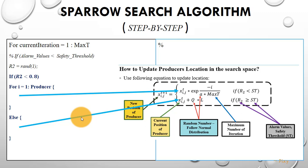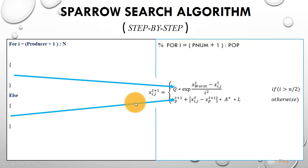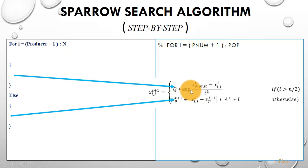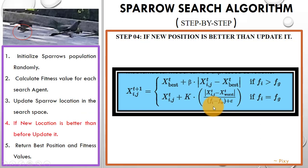Now we will update the position for the scroungers. Again we will check the condition — if this condition is true then we update using the first equation, else using the second. This one is for the final update. After that we will check if the new location we got is better than before, and then we will update it.